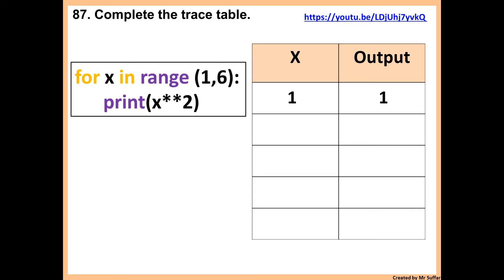Then x increases by 1, going to 2. 2 to the power of 2 will be 4. Then x increases by 1 again to 3. 3 to the power of 2 gives us 9. Then x increases by 1 again up to 4. 4 to the power of 2 will give us 16.